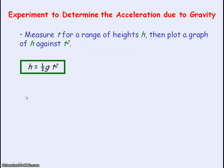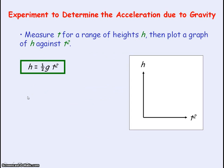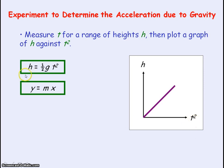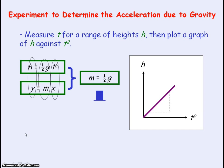We can then measure t for a range of heights h and plot a graph of h against t squared. That will give us a straight line through the origin because h is directly proportional to t squared. Comparing this with the general equation for a straight line through the origin, y = mx, our y values represent height and x values represent t squared. So the gradient m is equal to ½g, meaning g = 2 × gradient.